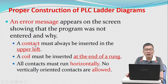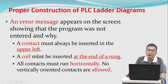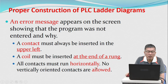A contact must always be inserted in the upper left. A coil must be inserted at the end of the rung. All contacts must run horizontally — no vertically oriented contacts are allowed.